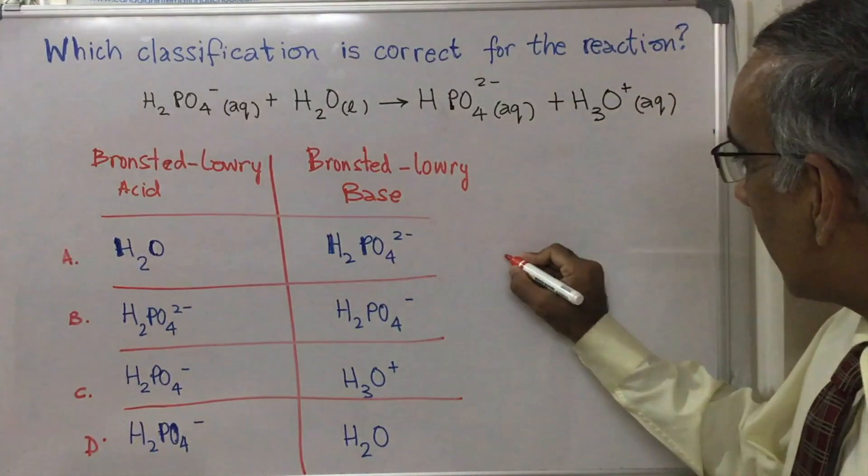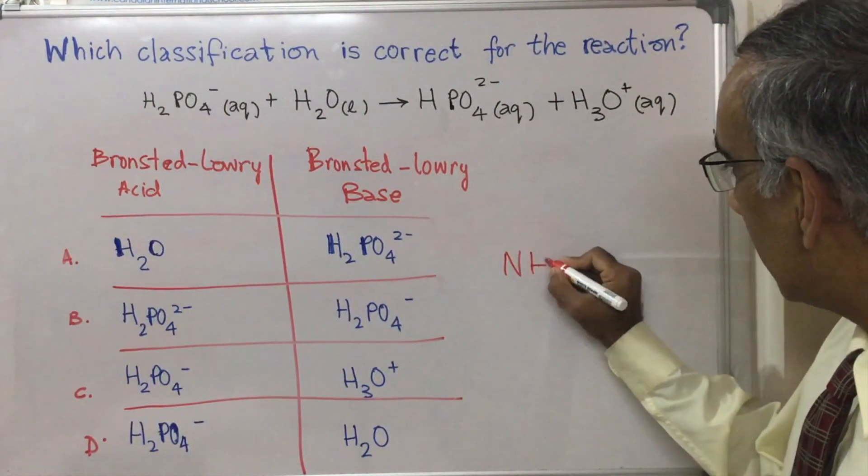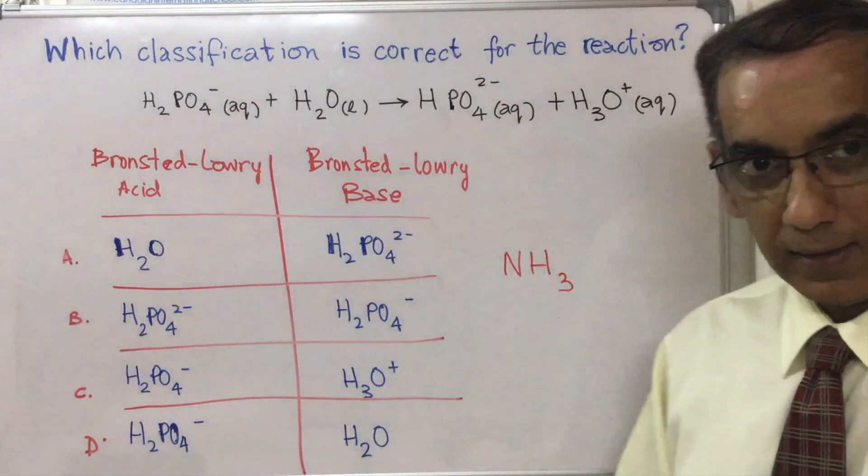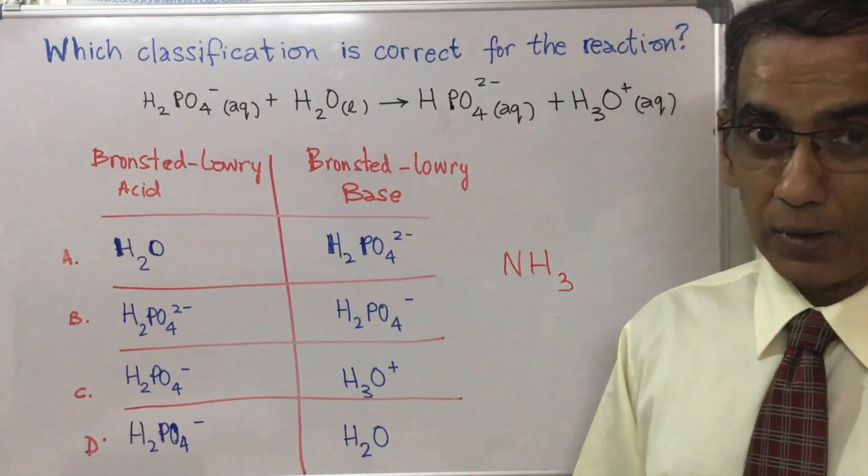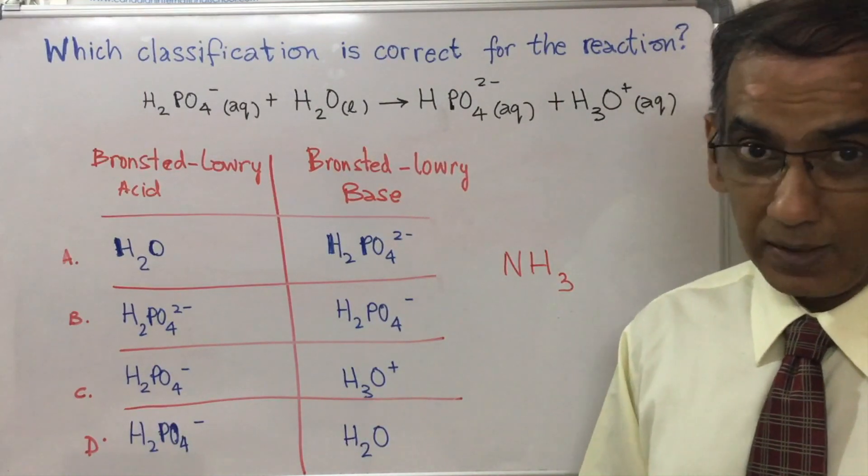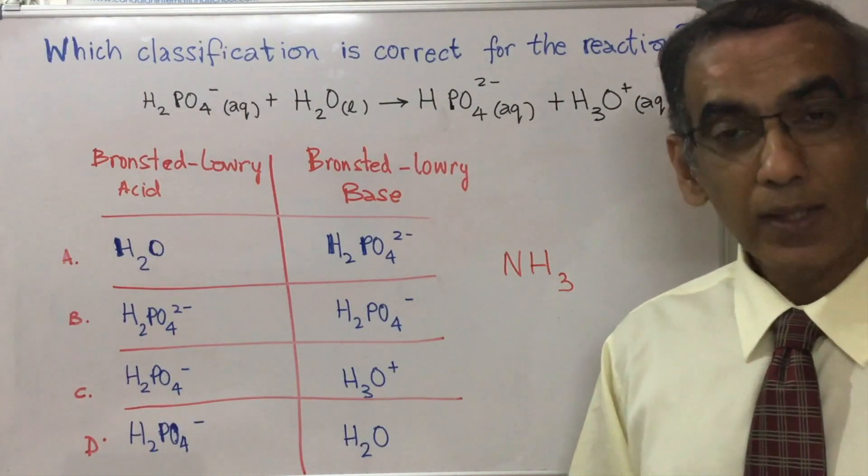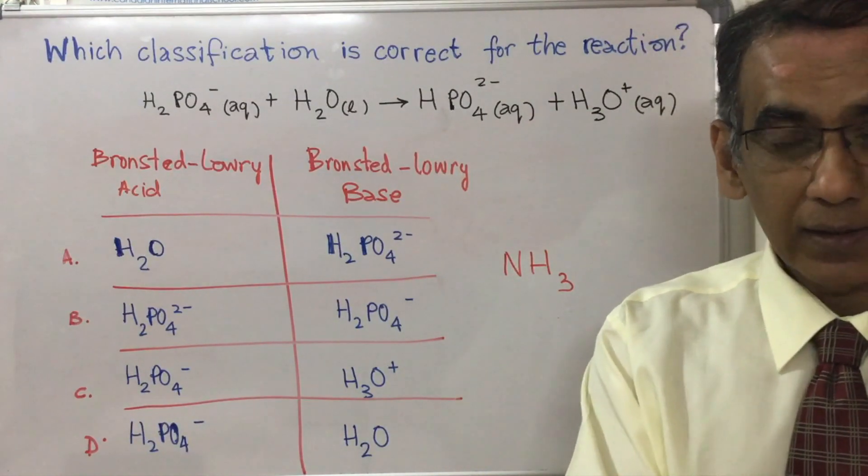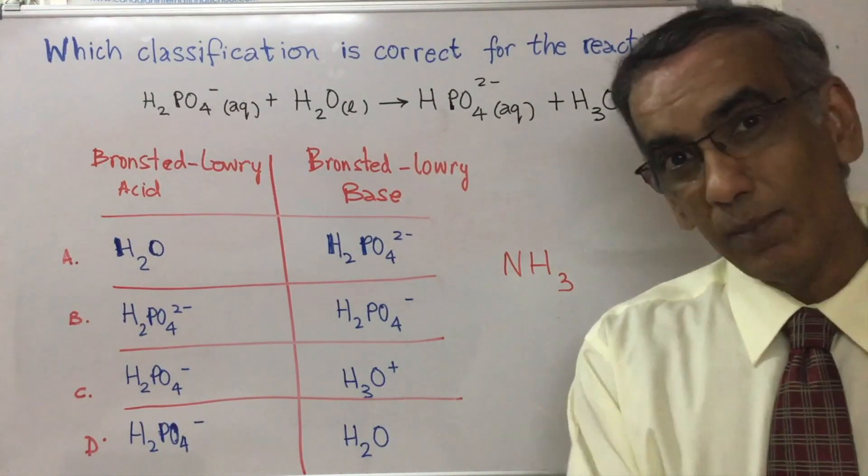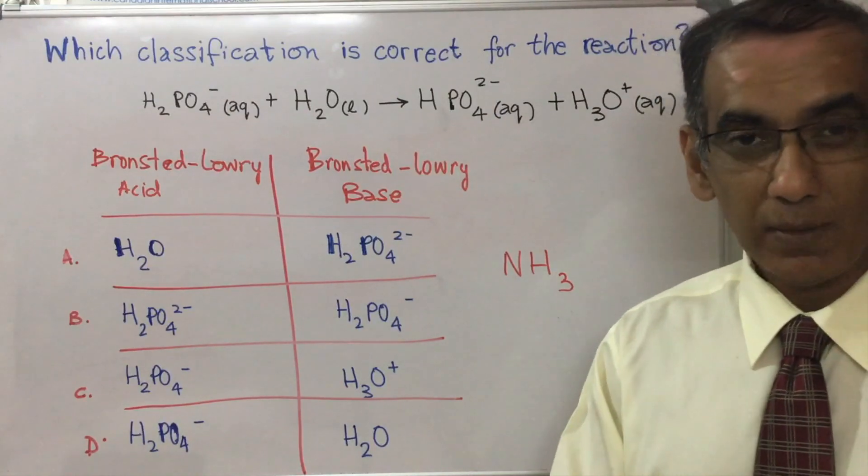So let's take a simple example like NH3, ammonia. Ammonia of course is known to be both a Bronsted-Lowry base and it also happens to be a Lewis base, but that part of the acids and bases content belongs to topic 18 for IB chemistry.